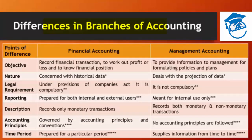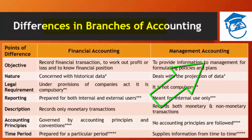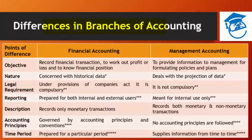If we talk of the differences between different branches of accounting, it is appropriate to distinguish only between financial accounting and management accounting, and financial accounting and cost accounting. As you can see on the screen, the table shows the differences between financial accounting and management accounting. The first point of difference is objective: in financial accounting, the objective is to record financial transactions to work out profit or loss and to know the financial position of the business concern.